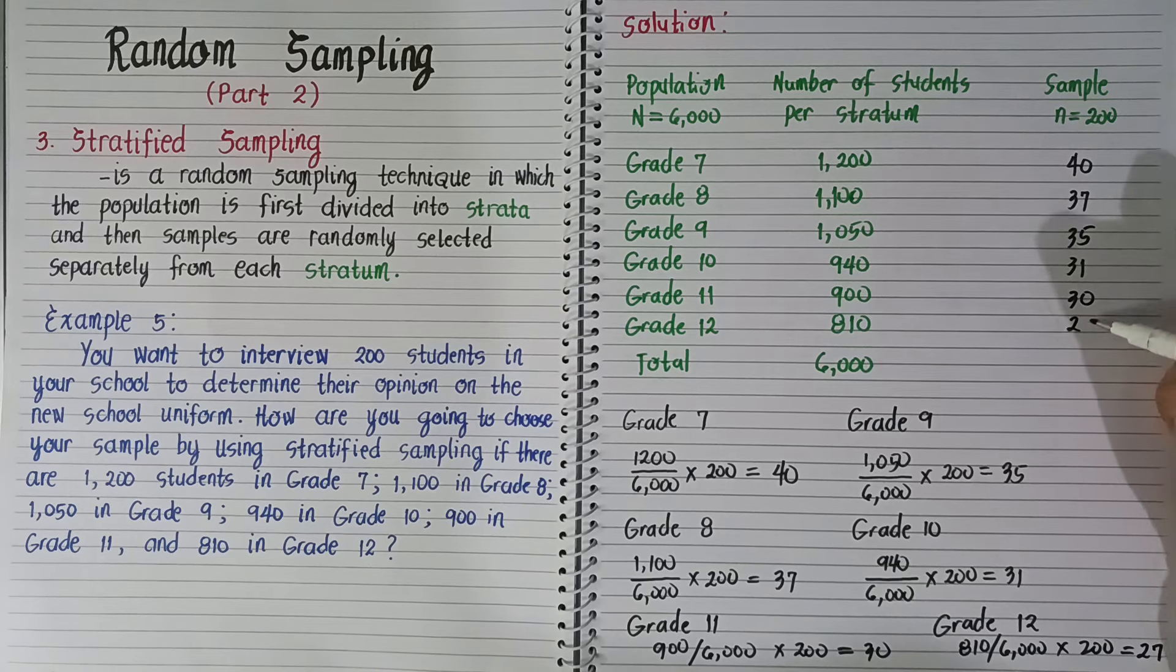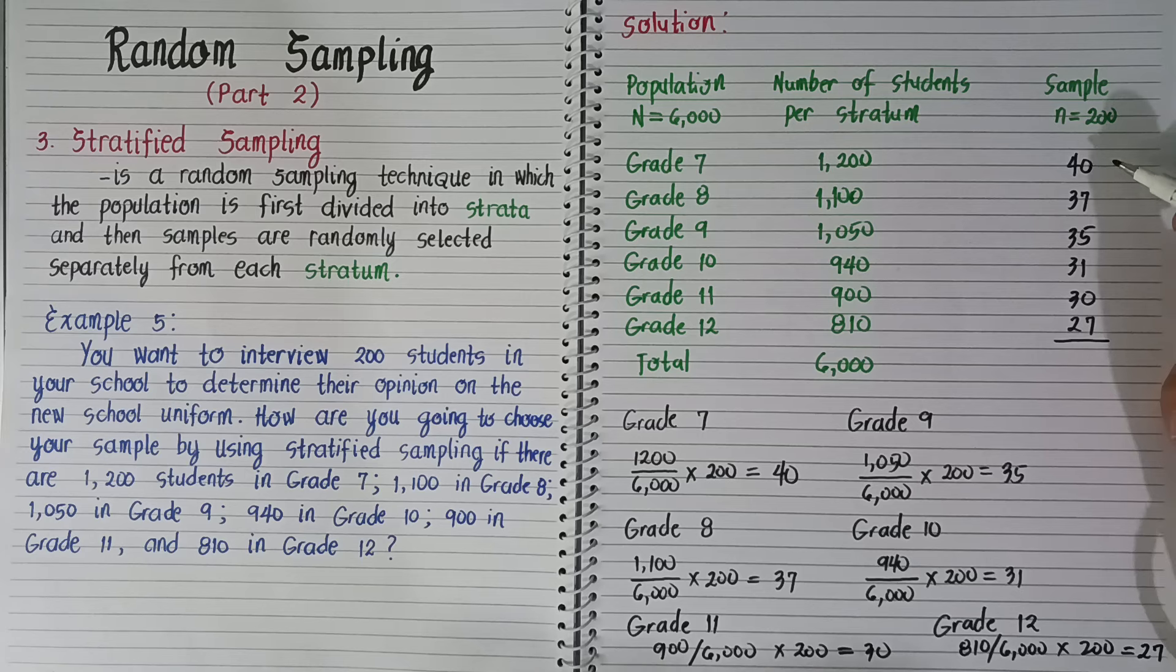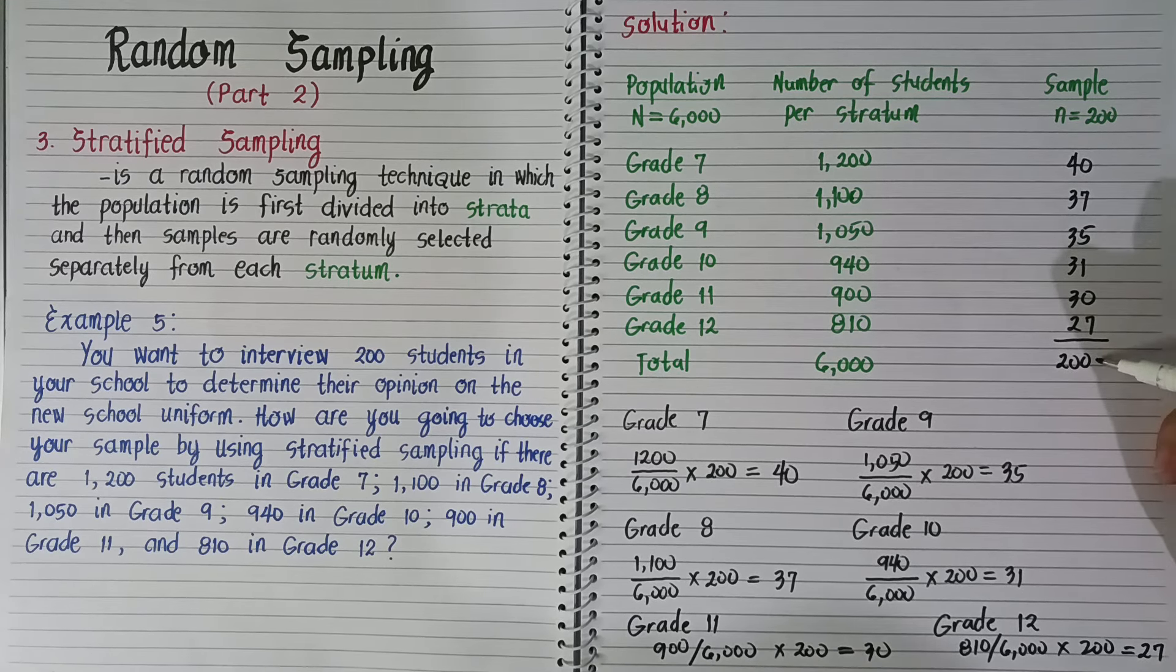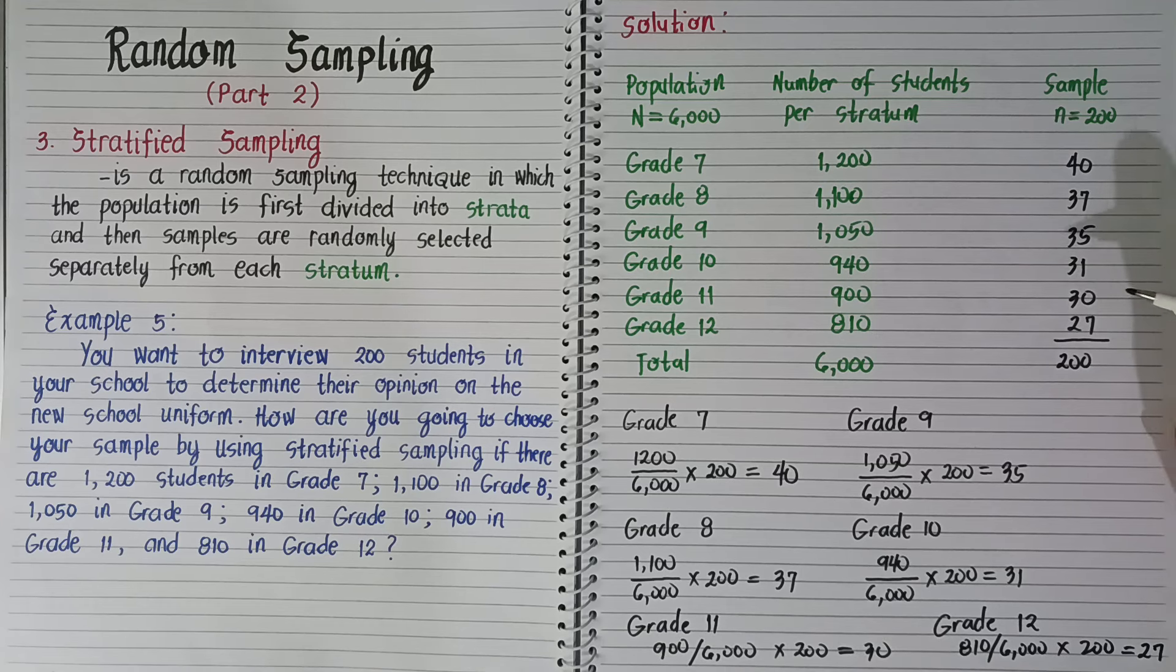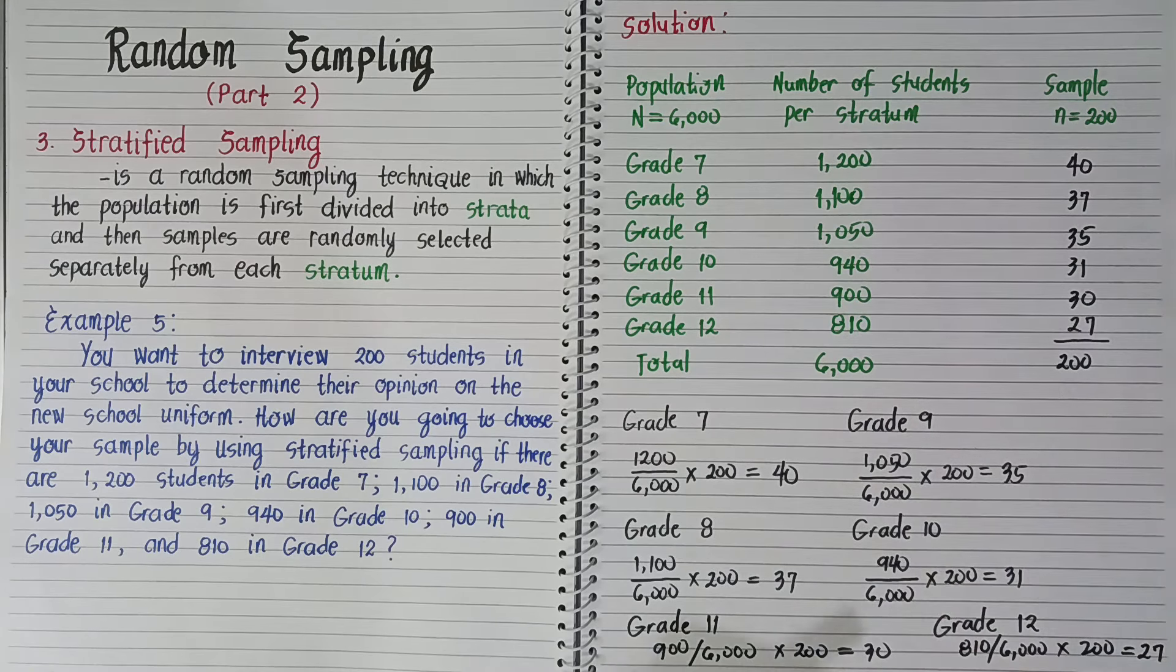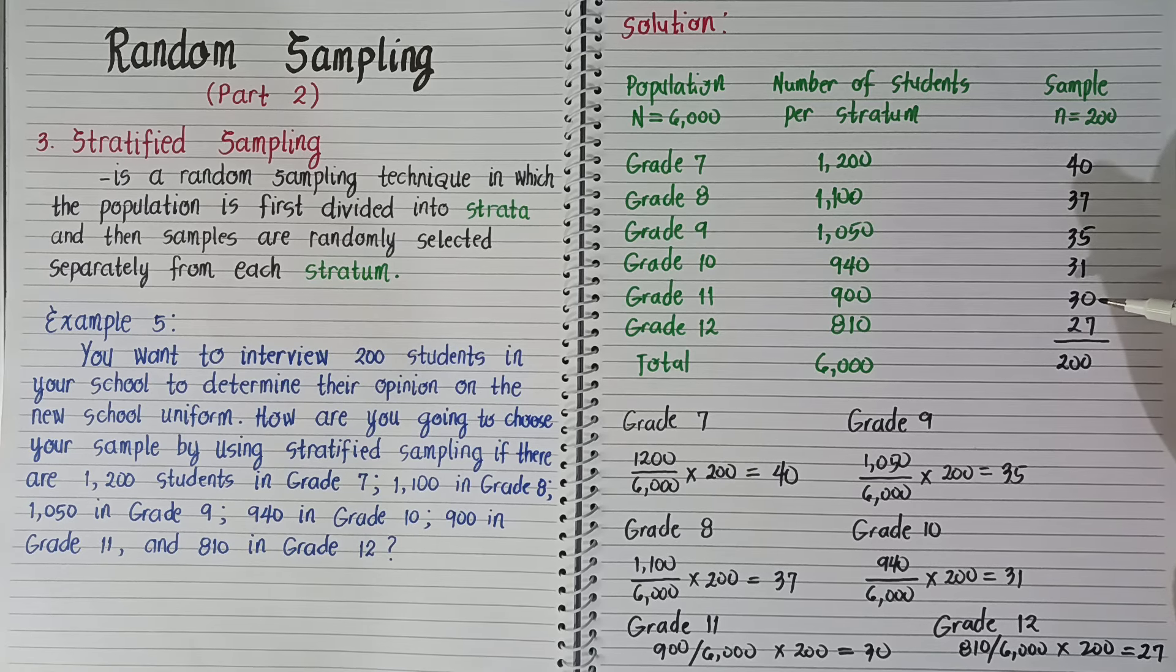When we total this, it equals 200. That's correct: 40 plus 37 plus 35, 31, 30 plus 27 equals 200. This means each grade level has representatives: 40, 37, 35, 31, 30, and 27. This is how we use stratified sampling.